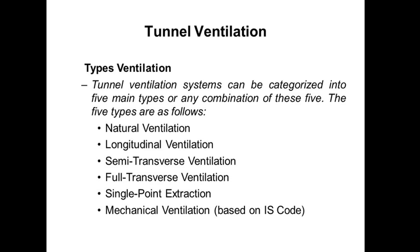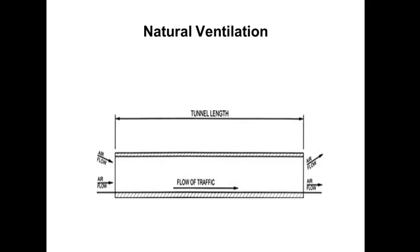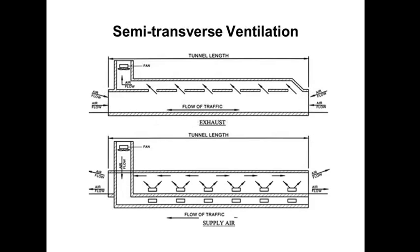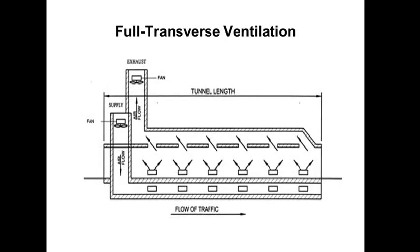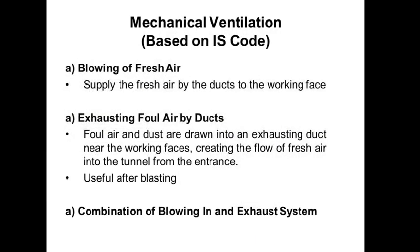The two major types are natural ventilation and mechanical ventilation. In natural ventilation, air flows from one side through the tunnel length. For longer tunnel lengths, longitudinal ventilation, semi-transverse ventilation, fully transverse ventilation, single point extraction, and fans are used for ventilation.